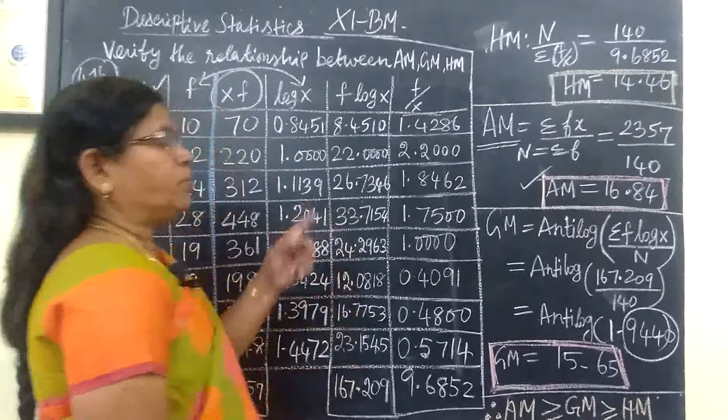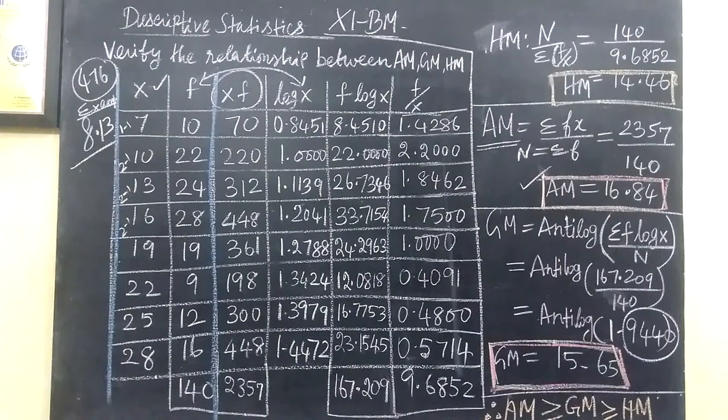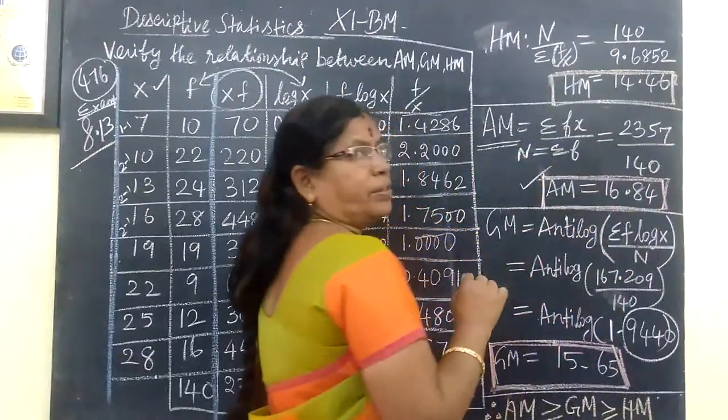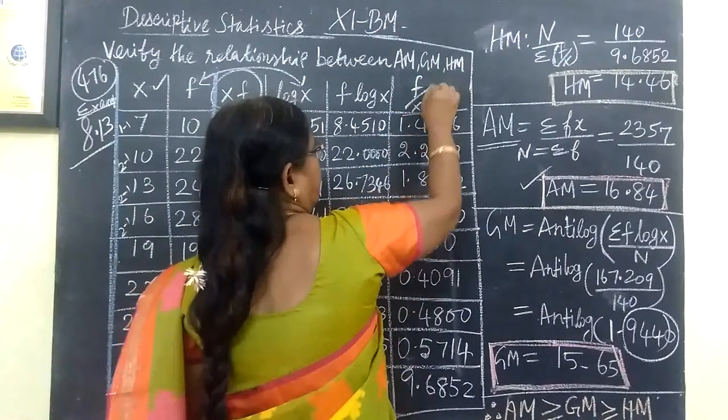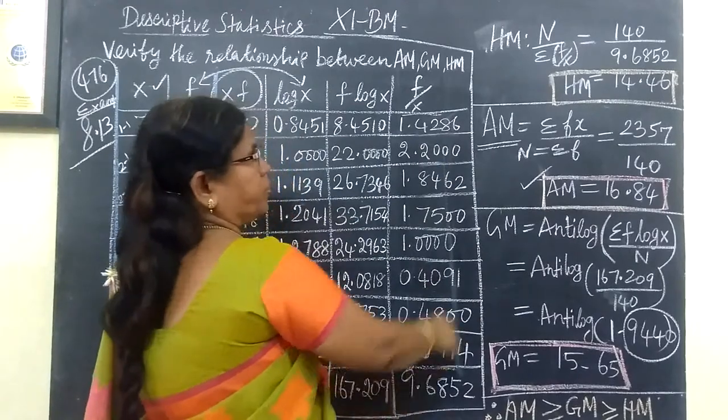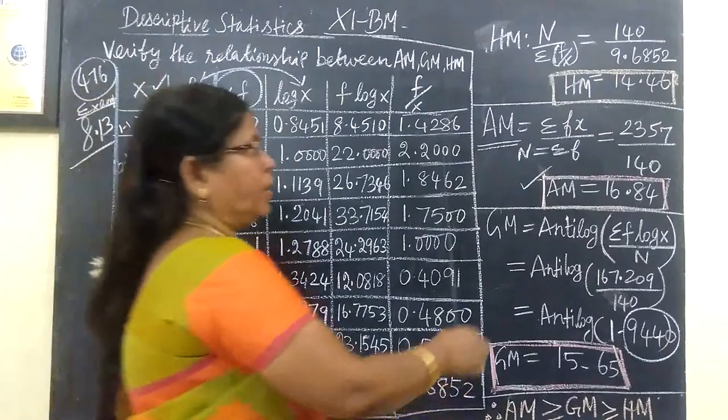Then harmonic mean. Harmonic mean equals n divided by sigma of f divided by x. Adding the frequencies here, we get the answer 14.46.